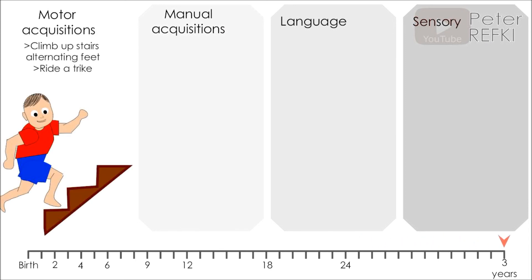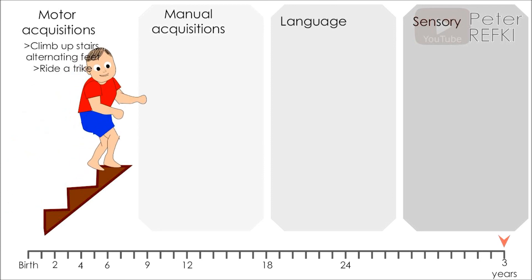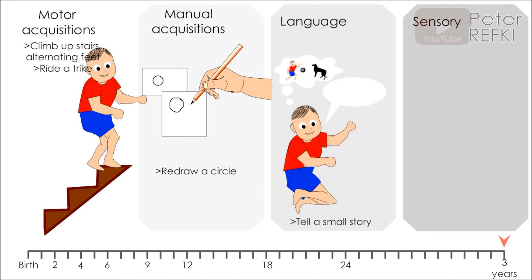At three years of age, the toddler can climb up stairs with alternating feet and can ride a trike, can copy and redraw a circle, can tell a small story, and is capable of putting on his clothes on his own.